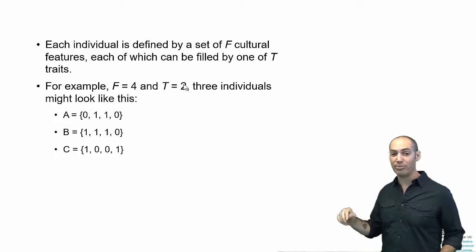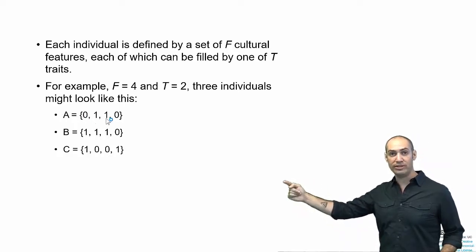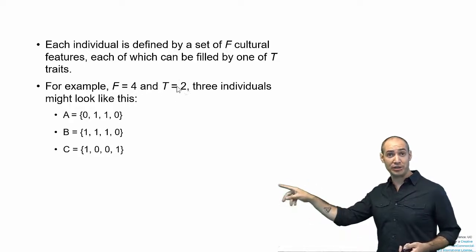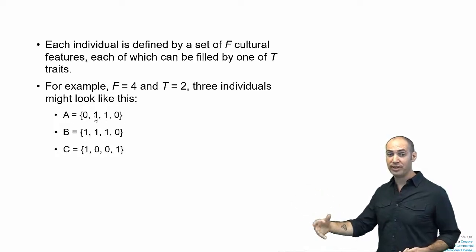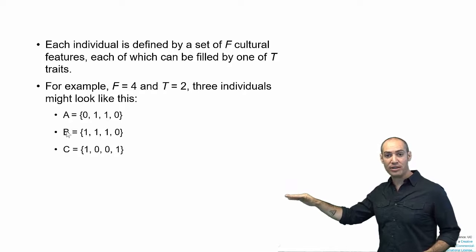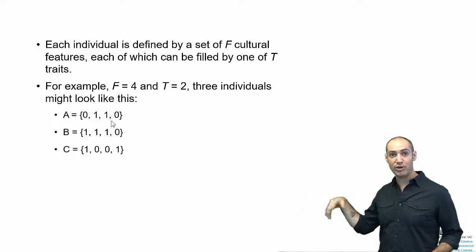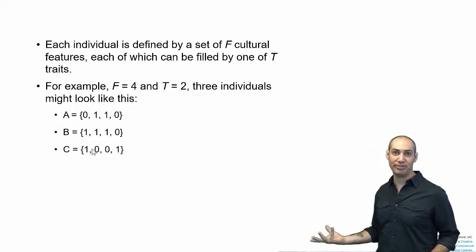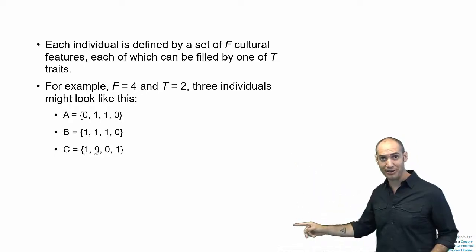For example, we can imagine a case in which there are four cultural features, each of which can take on two different values. So we can have three individuals that are represented by a set or a vector of numbers, each of which is say zero or one, that's two different values, and there are four of them. So here, individual A is defined by zero, one, one, zero. And these zero or ones could be any two things. It's just a way to say one trait versus the other at this particular spot. Person B is very similar to A. You see that B differs from A in the first spot, but is the same as A in all the other spots. So it's three out of four, 75% similar. Person C, on the other hand, is the total opposite of person A. It shares nothing in common with A. Everywhere that A has a zero, C has a one. Everywhere that A has a one, C has a zero. They're totally the opposite.